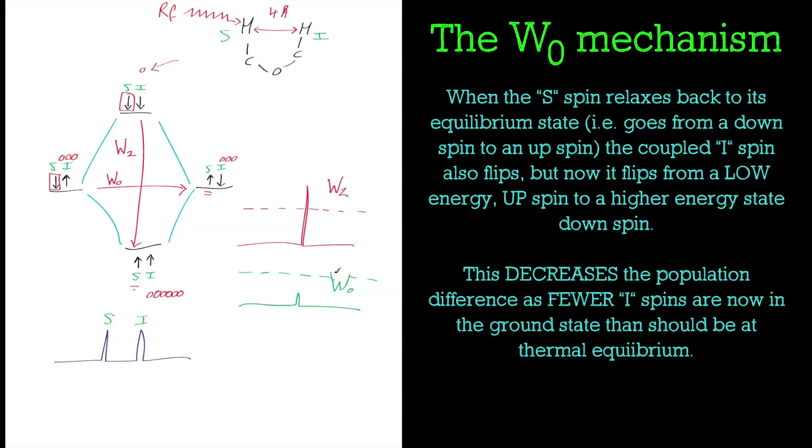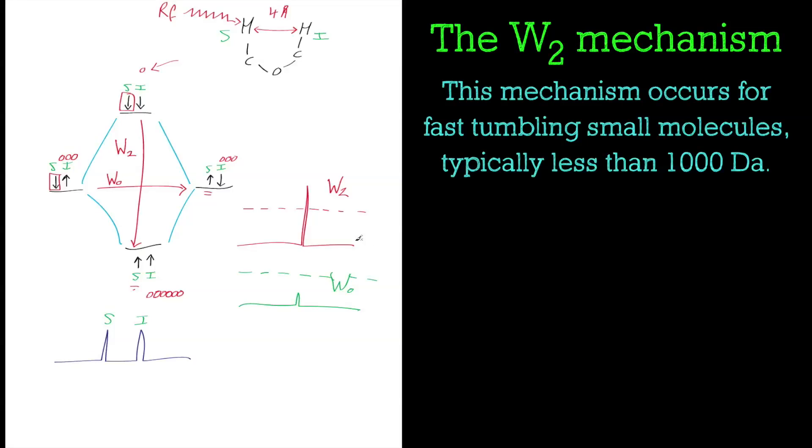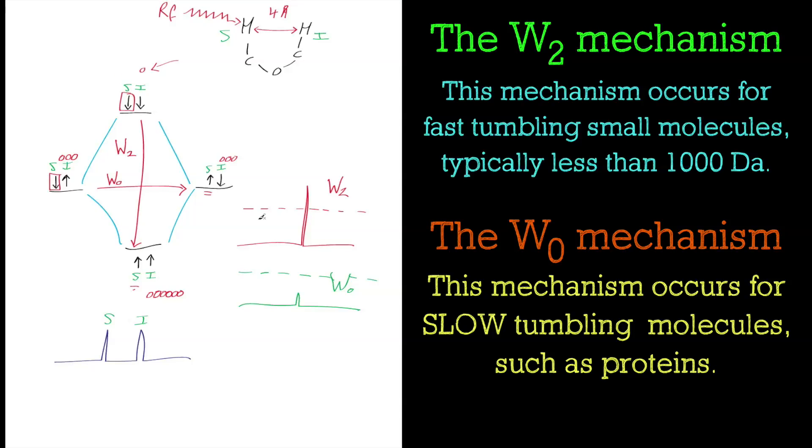These two mechanisms exist for NOE transitions but in different circumstances. The W2 transition exists for small molecules. If you're working with small molecules, 500 or 1000 Daltons, depending on the size of the magnet, the general thought is that if you're working with typical organic compounds, then it's the double quantum transition mechanism that contributes to the signal intensity. If you're working with larger molecules, biomolecules like proteins, then it will be the W0 or zero quantum transition mechanism that dominates, and that's why you get a decrease in signal intensity.